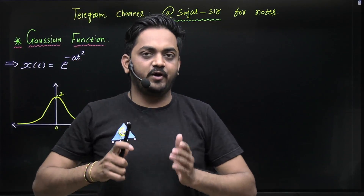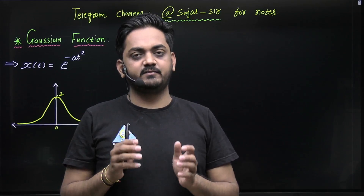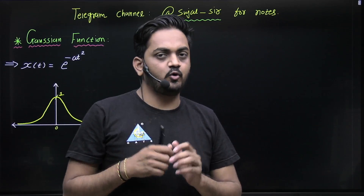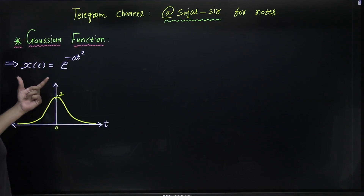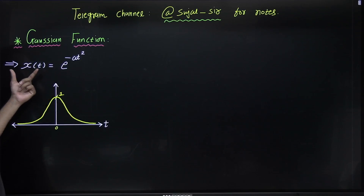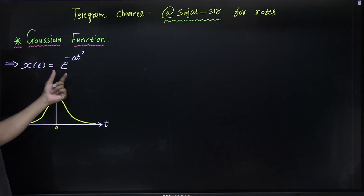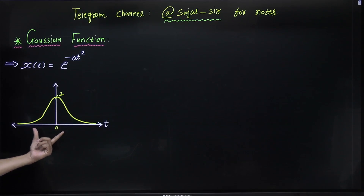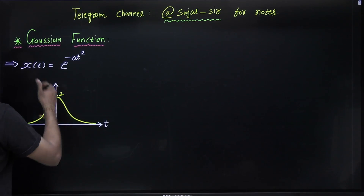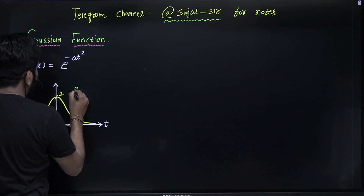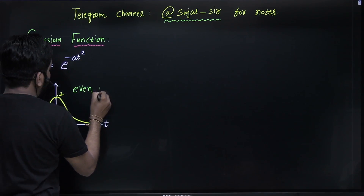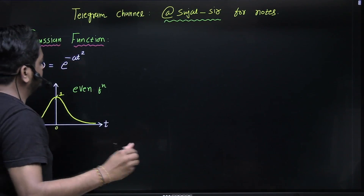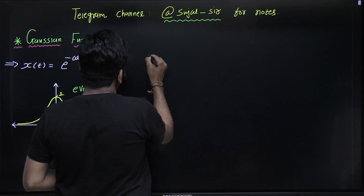Hello dear students, welcome to Get Academy. In this video I will tell you important information about the Gaussian function. The mathematical expression for the Gaussian function is x(t) = e^(-at²). If you draw it graphically it looks like a bell curve. First of all, the Gaussian function is an even function.